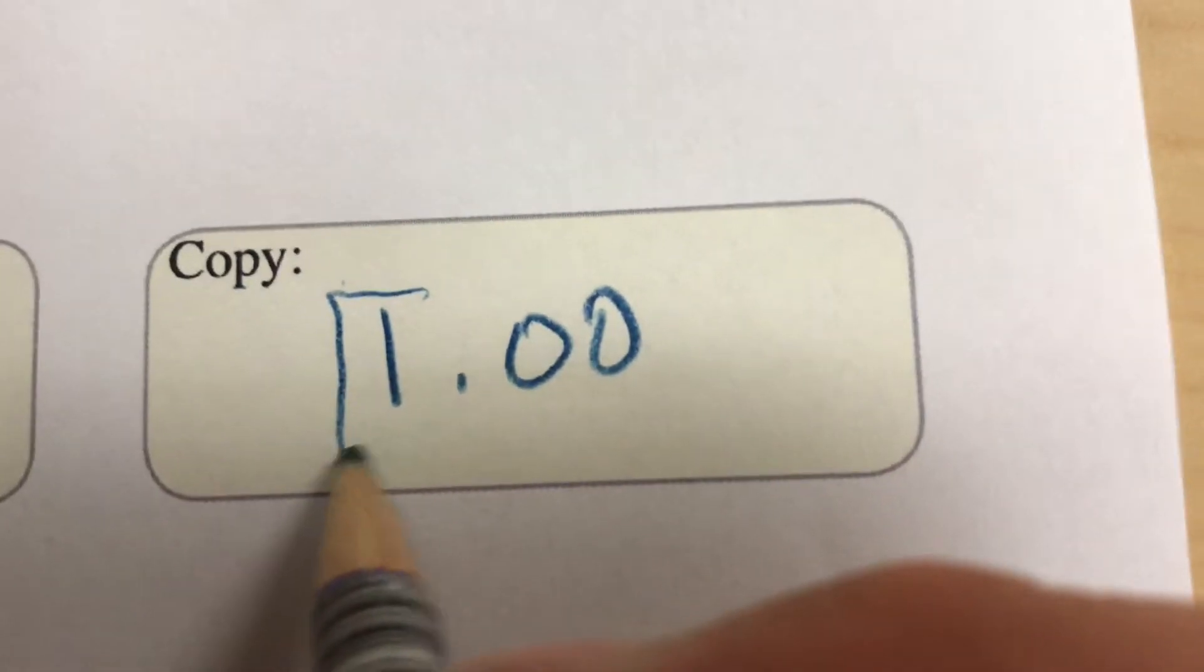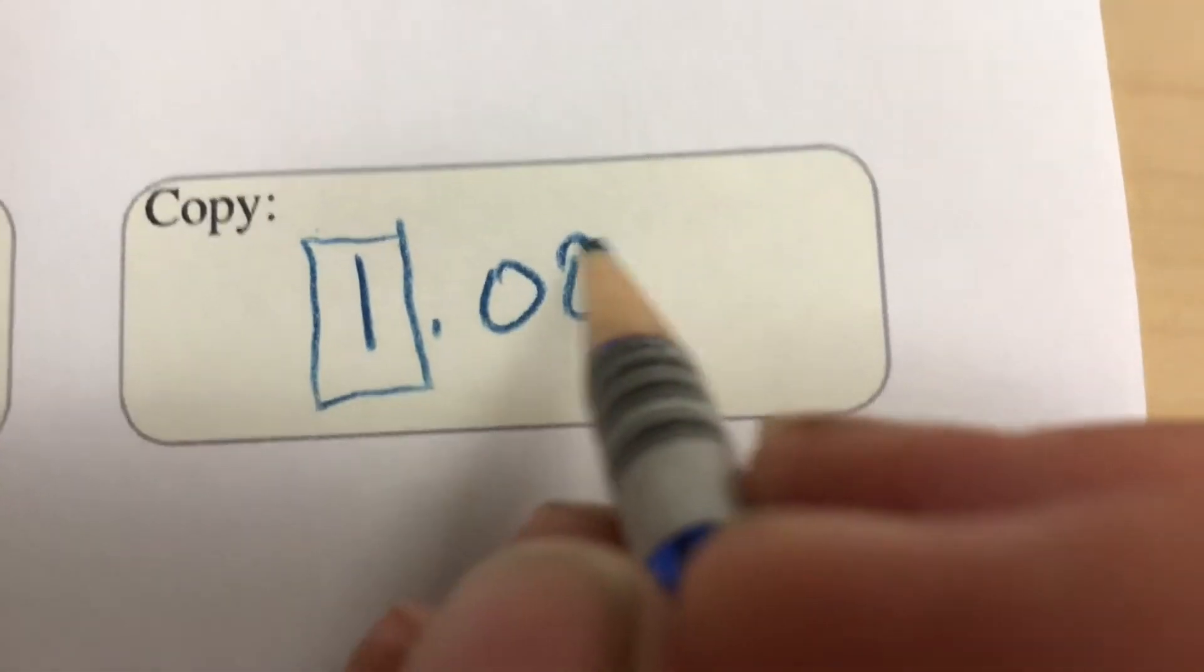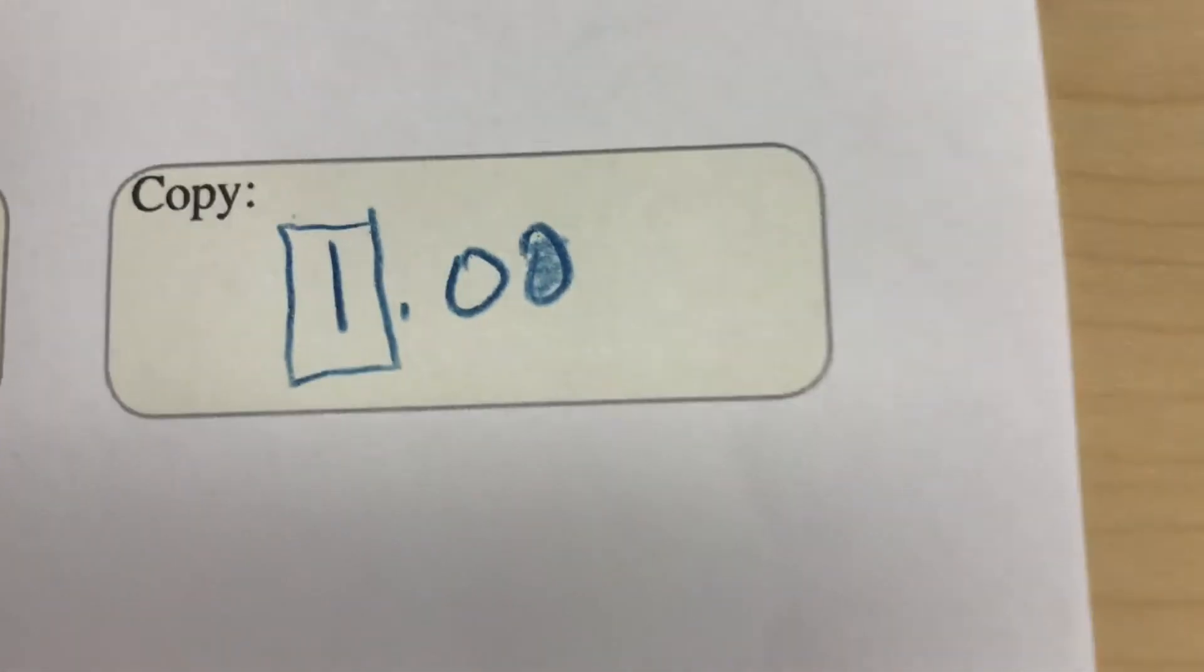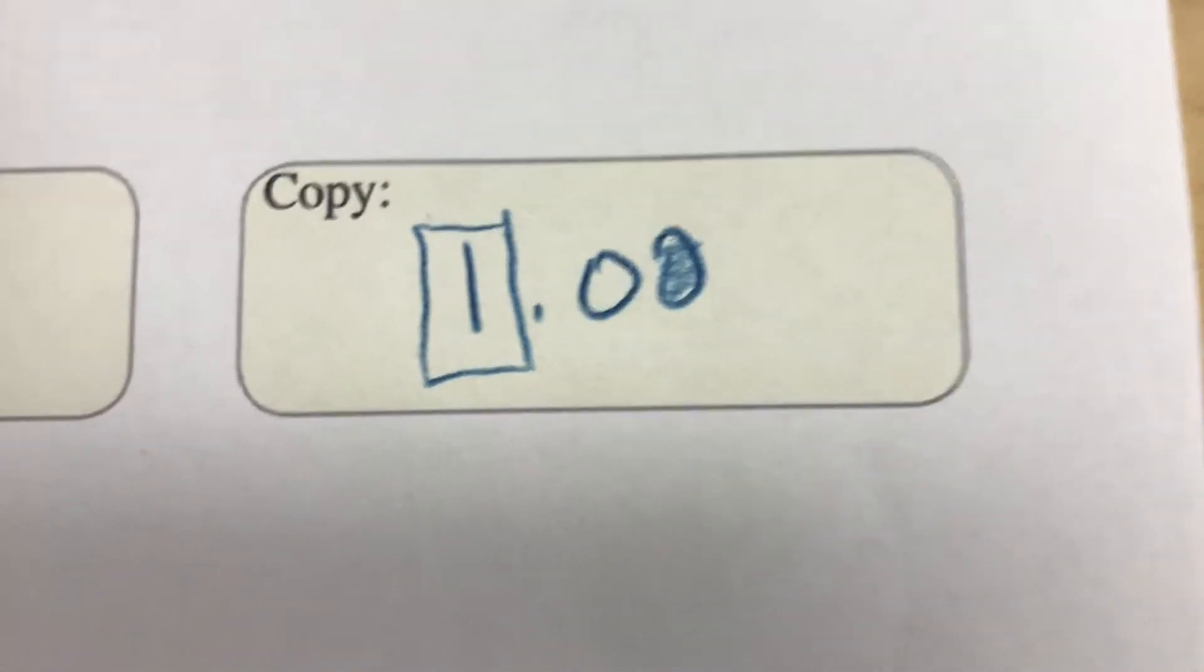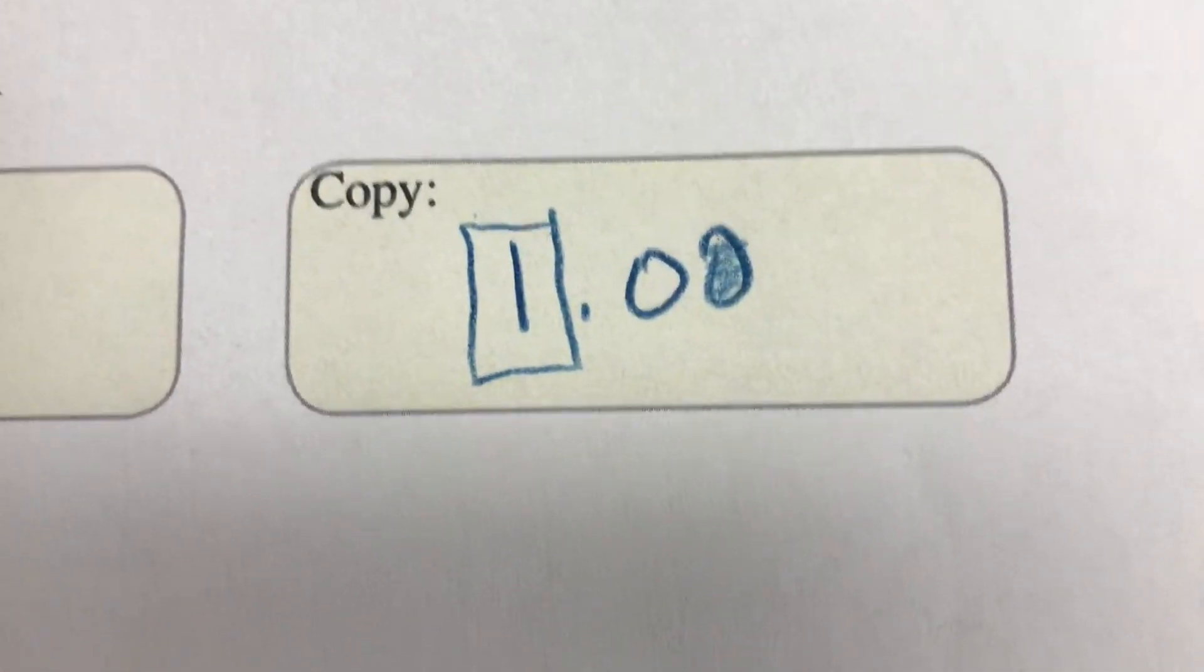You now have a way to justify these numbers. Again, it's a simple prompt: write one dollar, box the one dollar bill, shade the penny because the penny is a darker color than the rest of the change. Now you have some structure to work with.